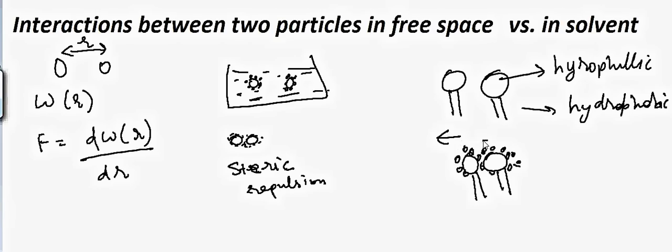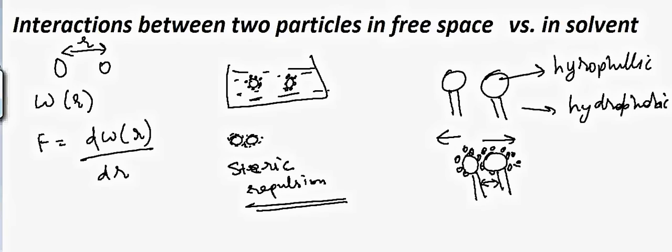There will be attraction at longer range but repulsion at short range because of the steric effect. This is how the interaction changes when something is dissolved in a solvent compared to being undissolved. The second possibility of solvent effect is the change in the charge density. Suppose you have a particle which has an H group on it.